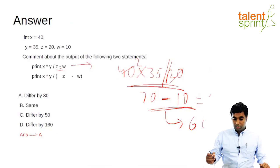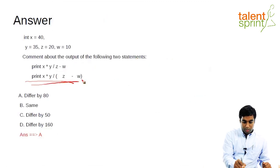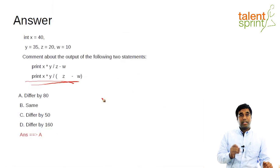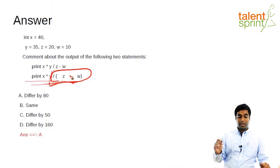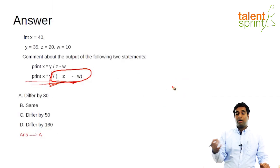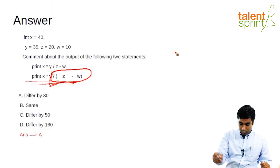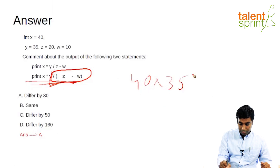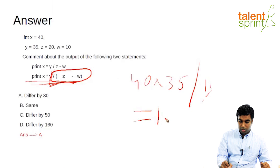Now let's evaluate the second expression. In the second expression we have a bracket. Bracket is always evaluated first — Z minus W equals 10, and that is evaluated first since brackets have higher precedence than multiplication and division. So now we have 40 into 35 divided by Z minus W which equals 10. The answer for this will be 140.